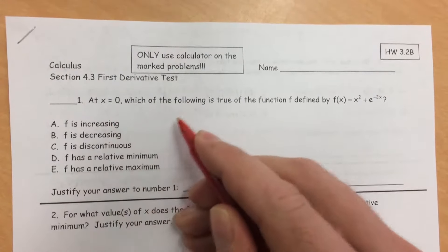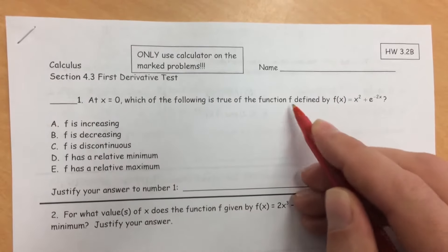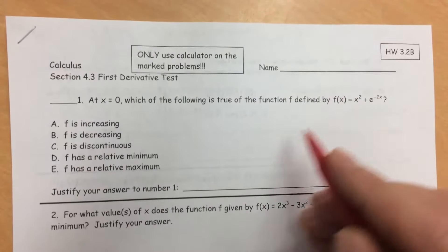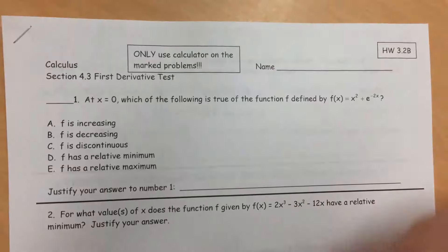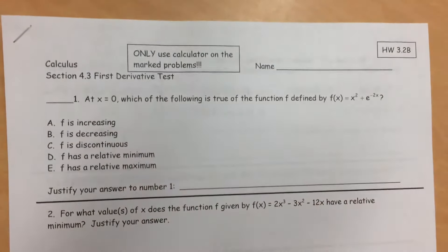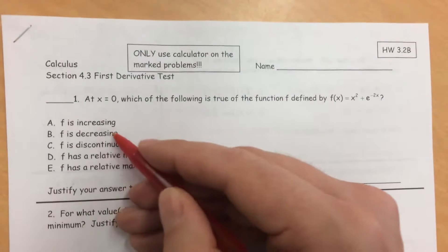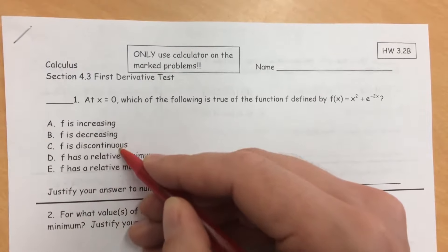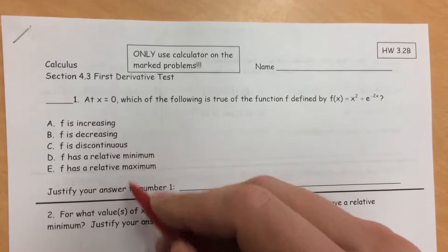The first one says, at x equals 0, which of the following is true for f defined by this? And I'm going to go a little bit deeper than the problem goes, because we want to make sure we know how to check all of these things. So to see if f is decreasing, increasing, discontinuous, relative minimum, relative maximum, we're going to first find the derivative.